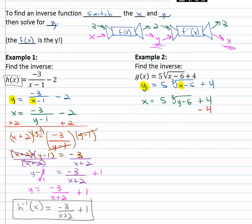Peeling away the layers, we'll start by subtracting 4 from both sides. x minus 4 equals 5 times the cube root of y minus 6.